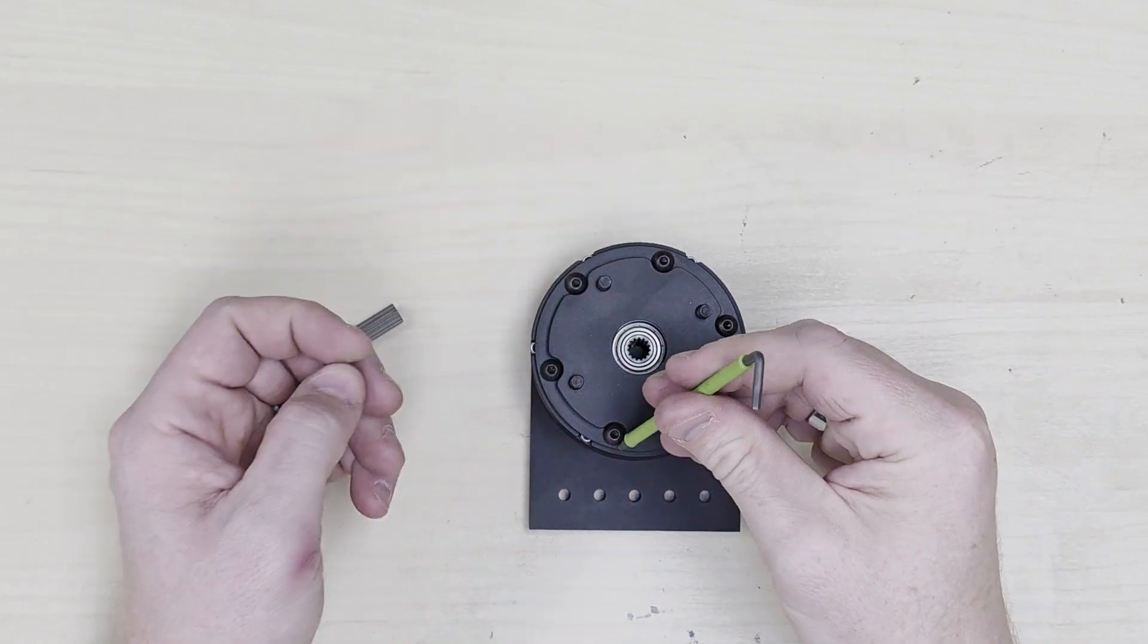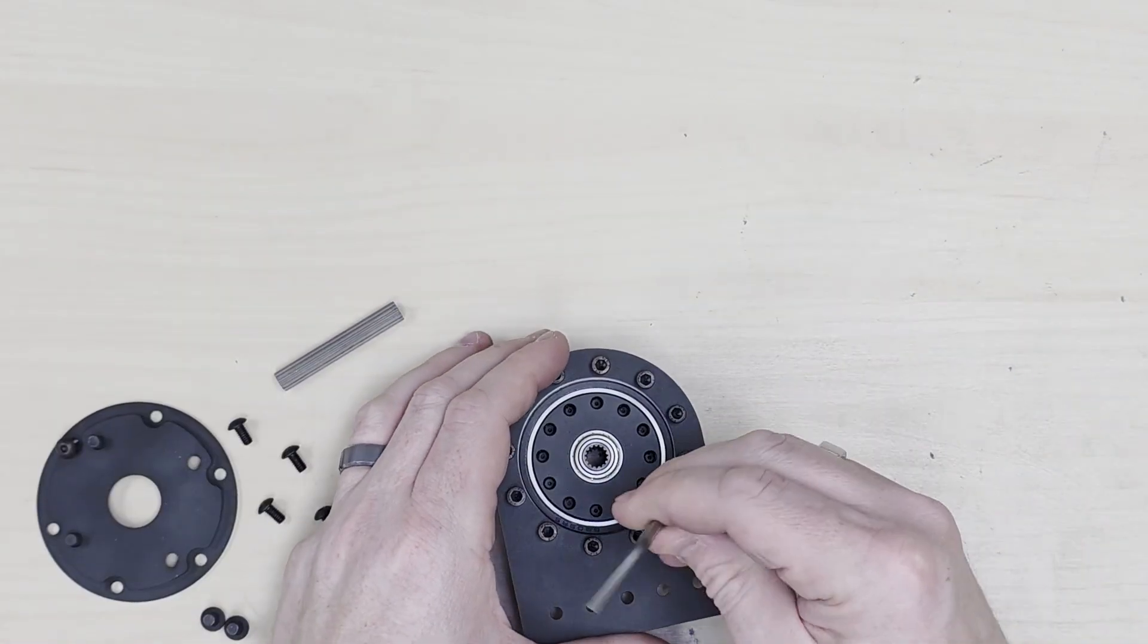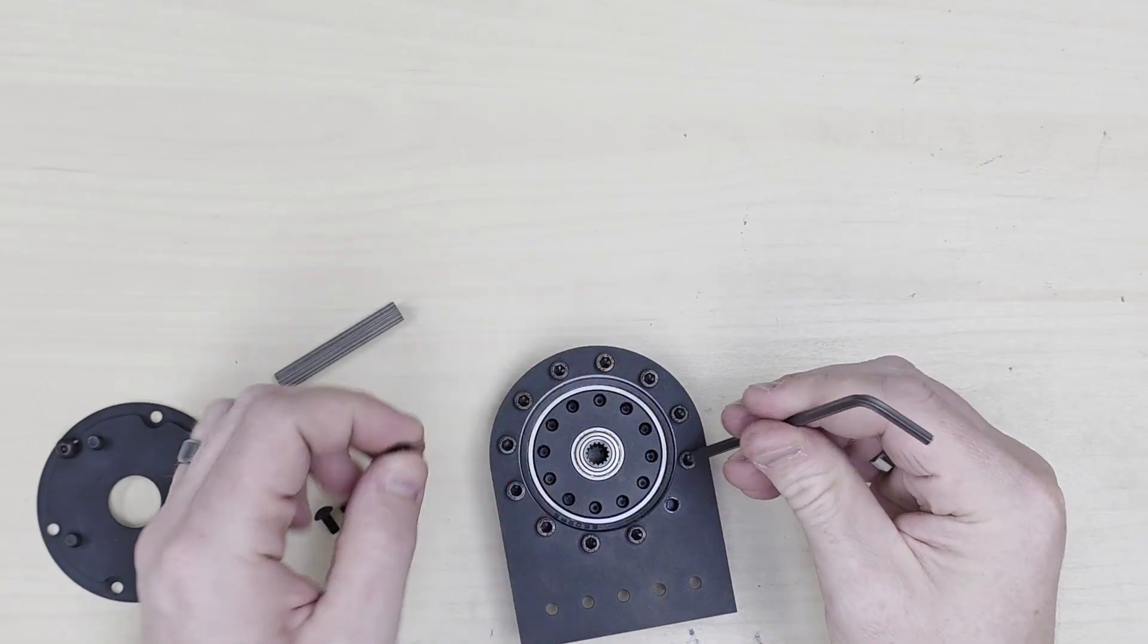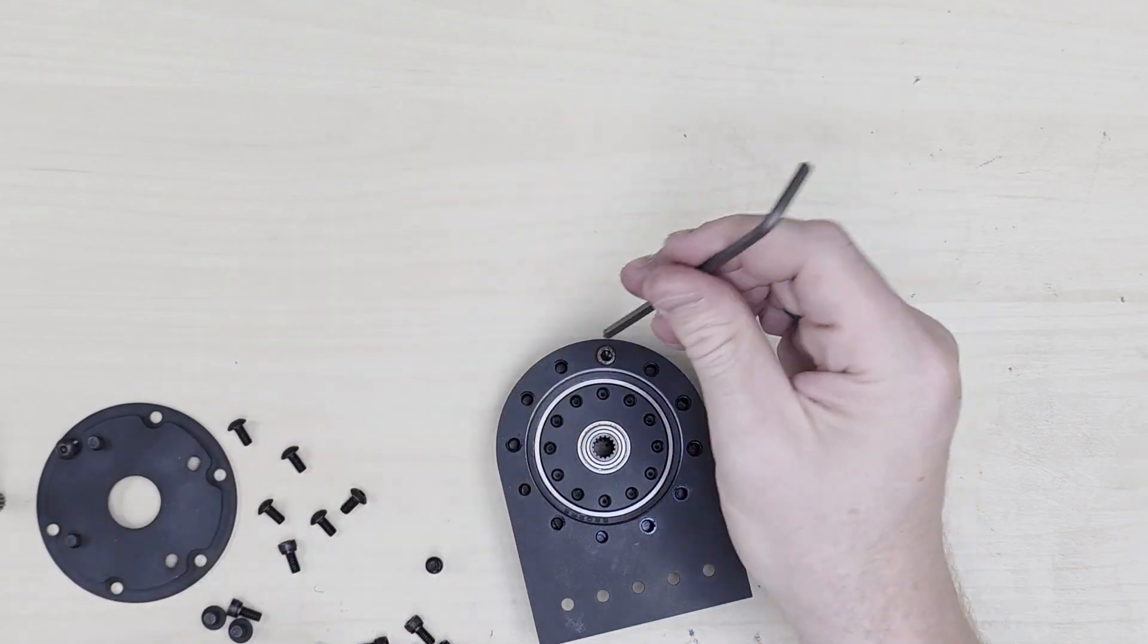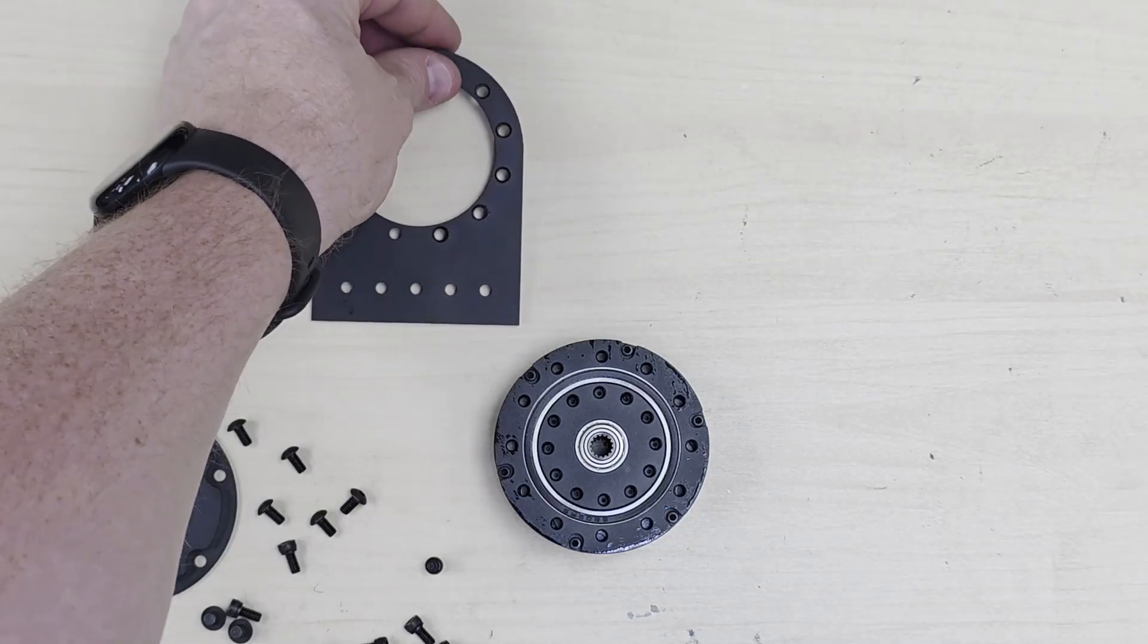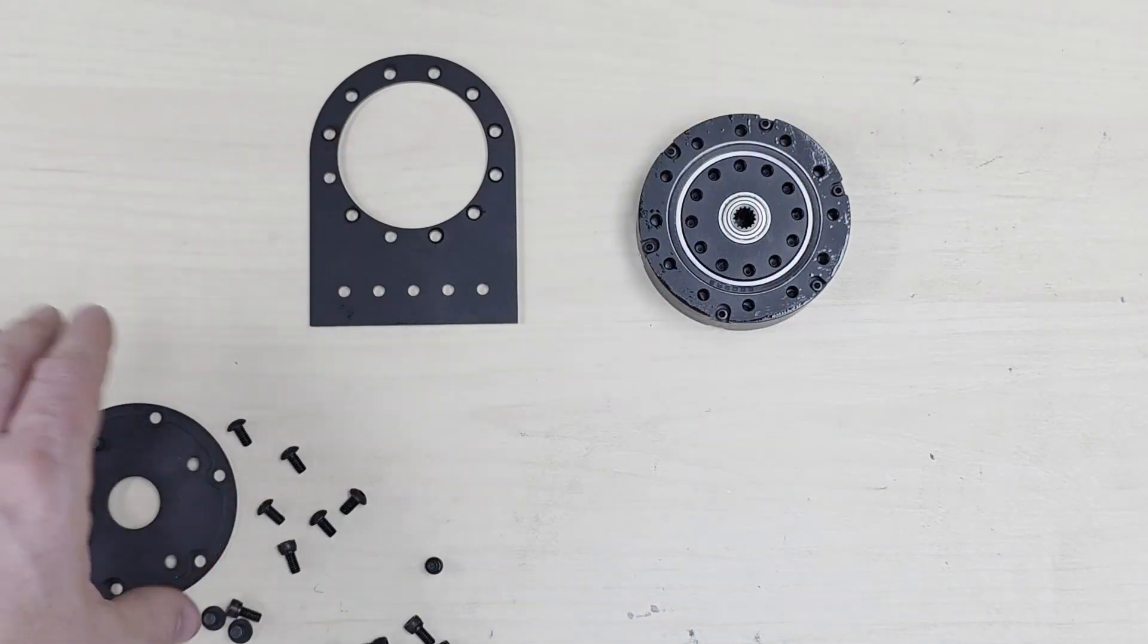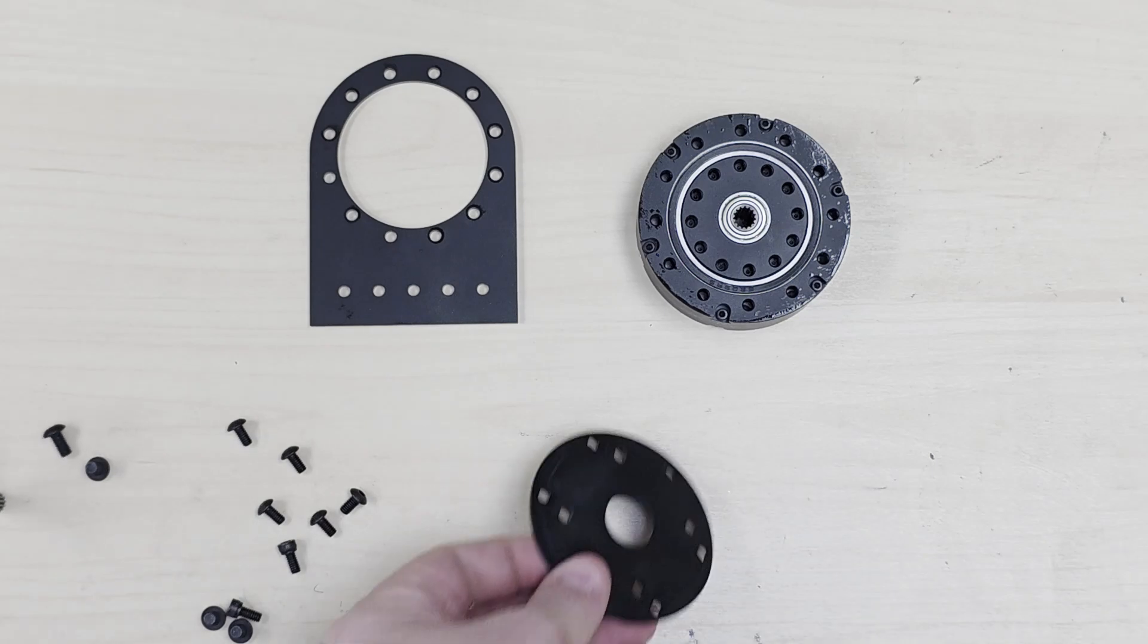Go ahead and remove the motor mount plate and the face mount plate to get the gearbox by itself. You can set aside the face mount plate and the motor mount adapter plate, as we're not going to use them for this application.